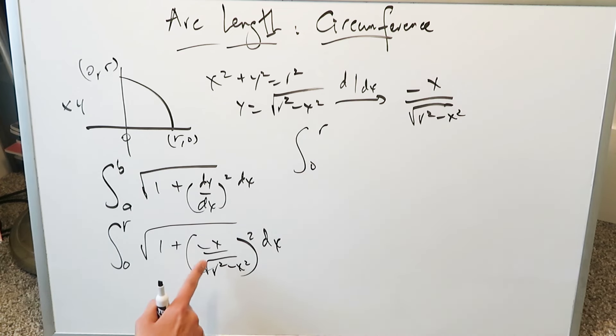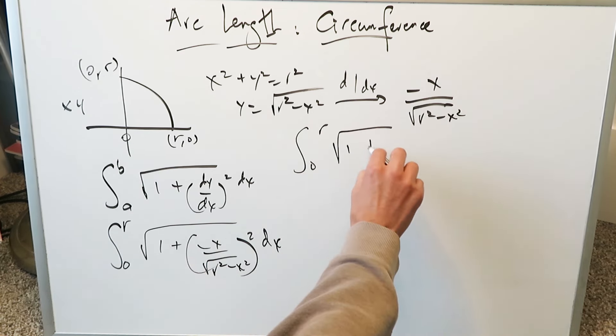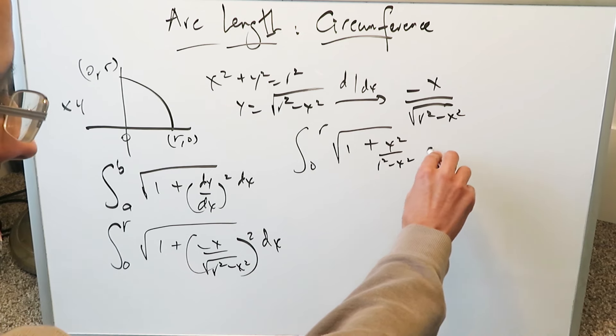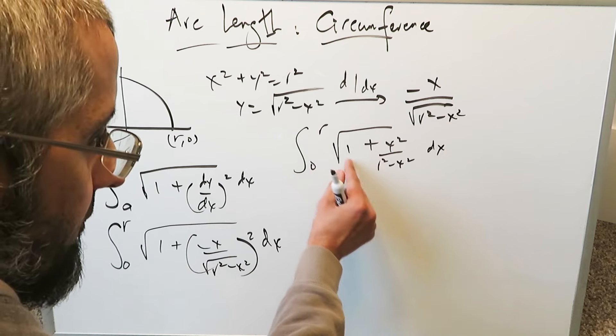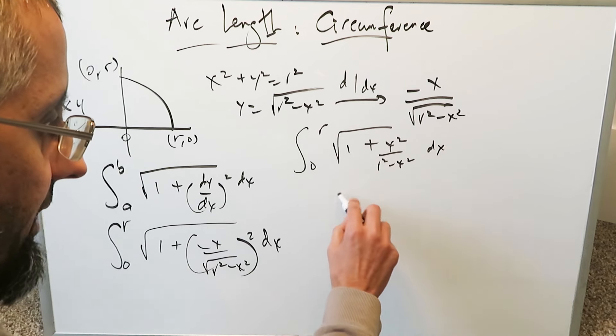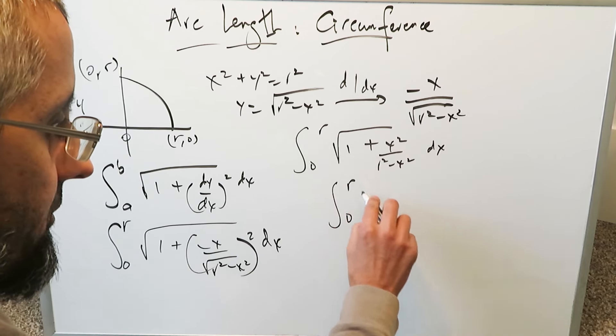0 to r. You can square this out. You'll have 1 + x²/(r² - x²) dx. You do the common fraction algebra over here. This will come here in the numerator. The x² will cancel out.